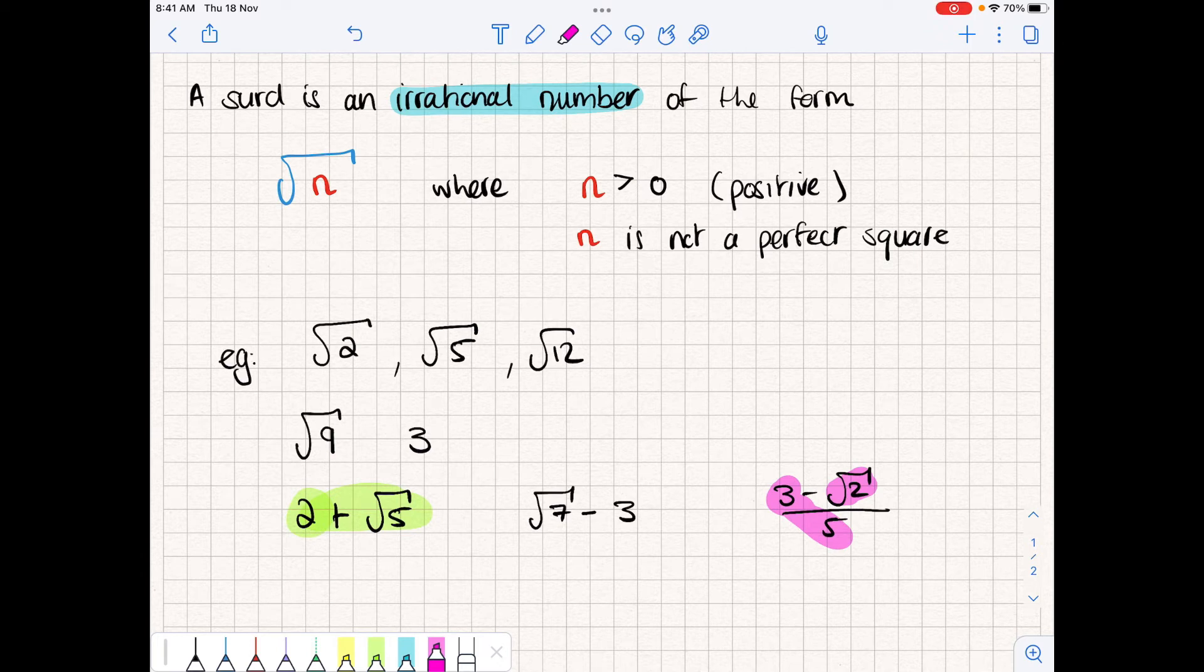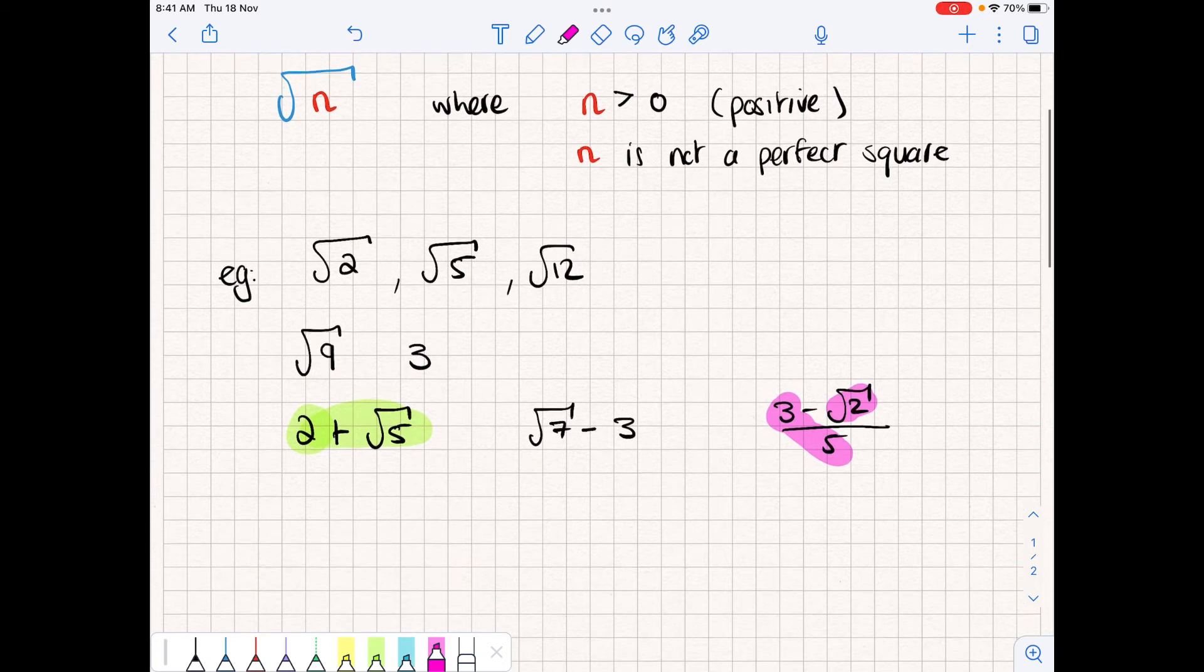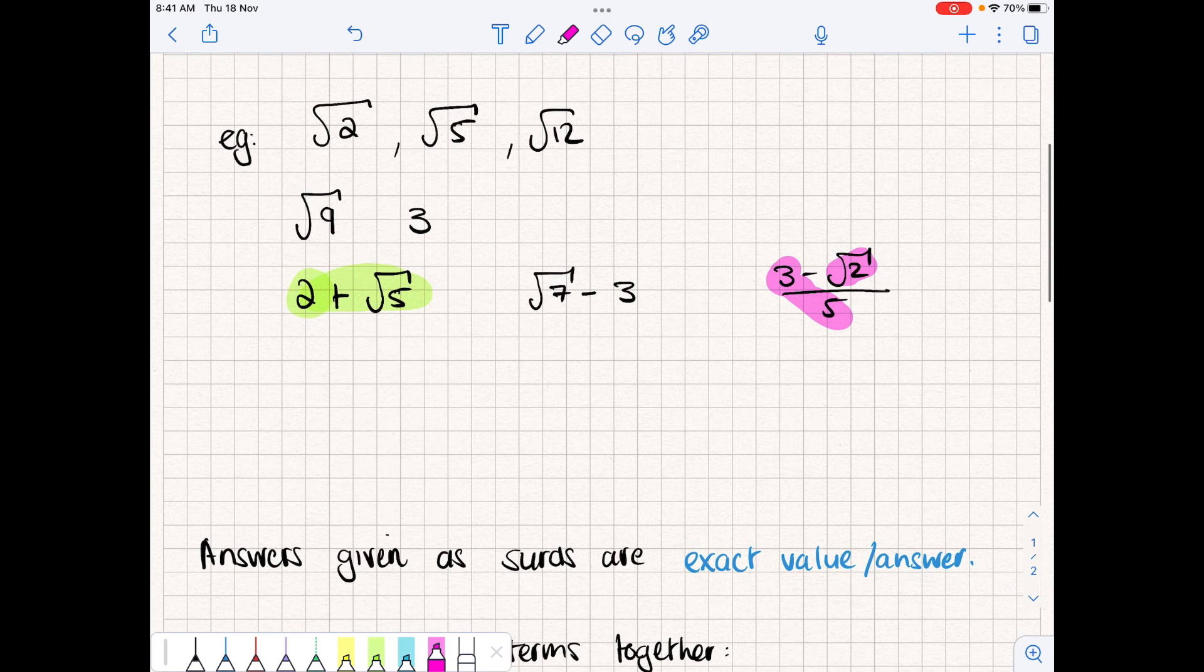Now, the important thing with working with surds is when we are asked to calculate something called exact value. When we give answers as surds, this is exact value, because exact value numbers have not been rounded or simplified. So we get the exact value of the number we're interested in.